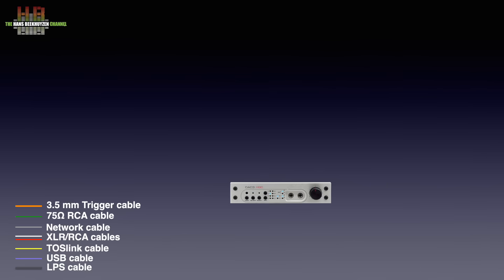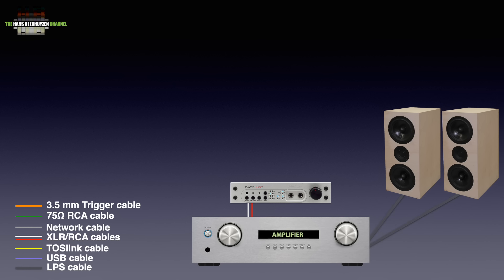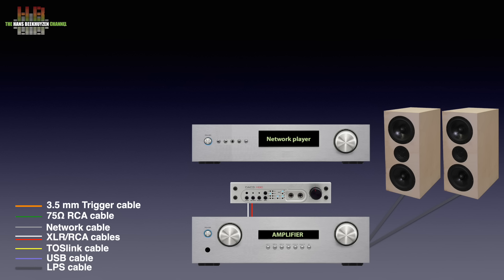The analog outputs of the DAC-3 can be connected to an amplifier over either XLR or RCA interlinks. The amplifier will have a pair of loudspeakers connected. The DAC-3 needs a digital or analog source — let's focus on the digital side; I will come back to the analog inputs later. The digital source can be a CD player or network player; let's take the latter for this diagram. It has to be connected to the DAC-3 over SPDIF, TOSlink, or USB.